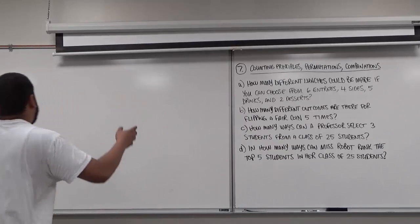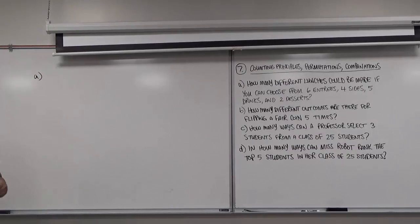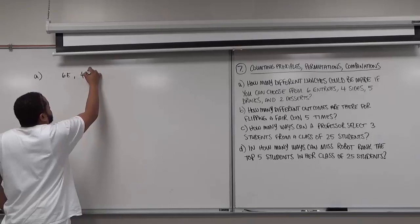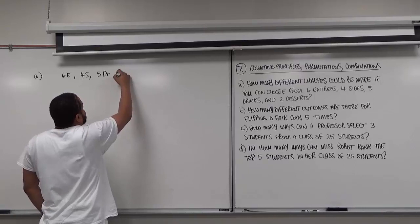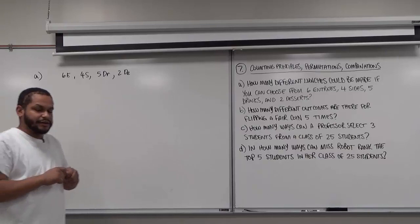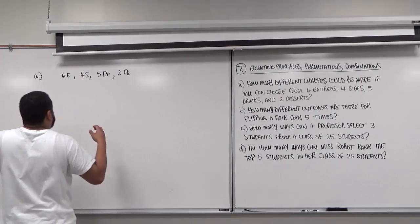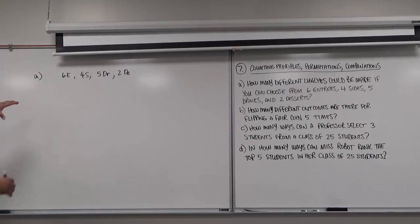In Part A we're trying to determine how many different ways we could select a lunch if we have 6 entrees (6E), 4 sides (4S), 5 drinks (5DR), and 2 desserts (2DE). The way this works as a counting principle, we have to understand how the tree diagram works, and from the tree diagram we get a better understanding of the counting principle and how to fast-forward instead of making a huge tree diagram.